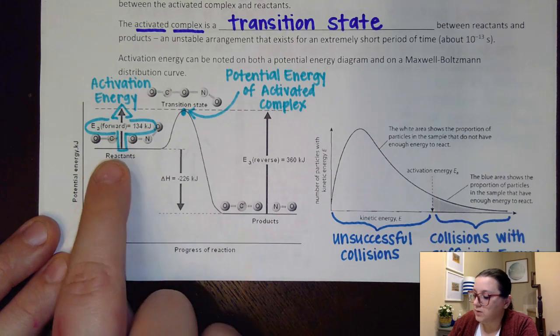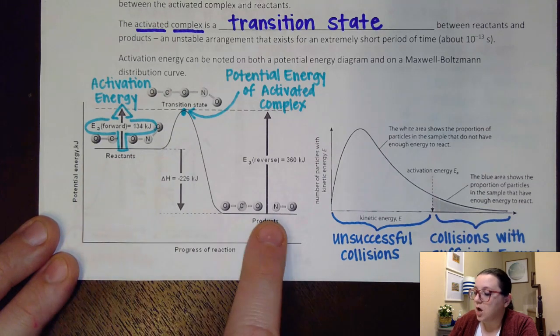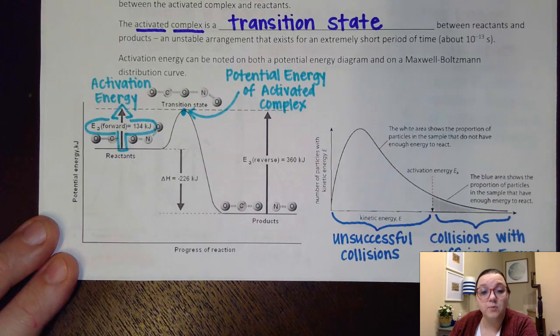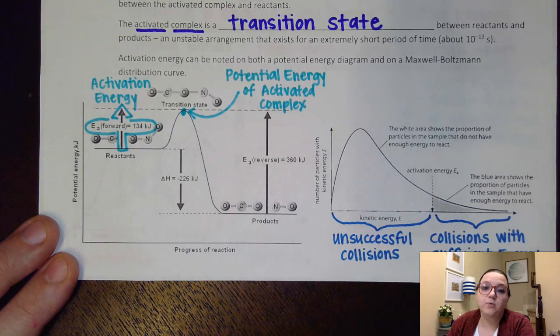For example here, as reactants changed into products we lost potential energy and it got released as heat, as kinetic energy, and that release of heat would indicate that we had an exothermic reaction here.